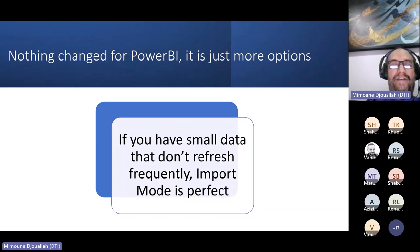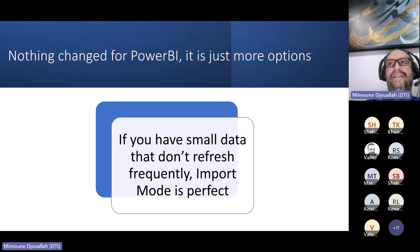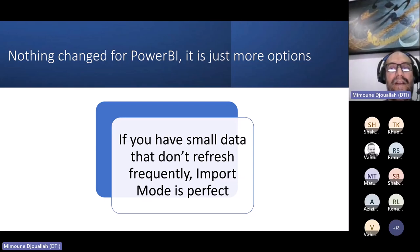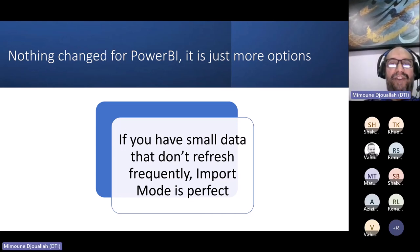For Power BI users, to be very clear: Fabric just gives you more options. If what you're doing is working fine — especially with small data, which some people define as up to 10 gigabytes compressed — you don't need to change anything. You can ignore Fabric and move on. They didn't touch anything in Power BI itself; they just added more options. If it's not broken, don't fix it.